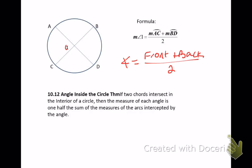Here's angle one — the angle we want to find. The front arc is just the arc that it's looking at, and the back arc is the arc right behind it. So AC plus BD divided by 2 would get you the measure of angle 1. We may know the angle sometimes, or we may need to find an arc, or we won't know one of the arcs and we know the angle — just plug in what you've got and solve.